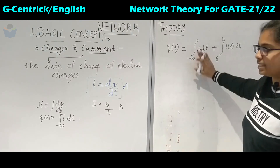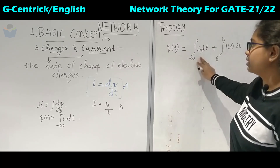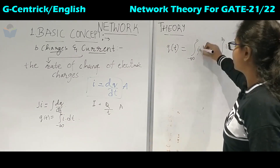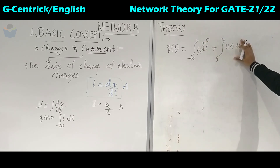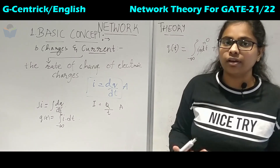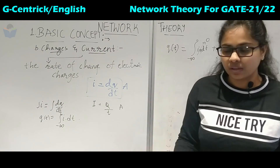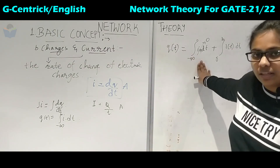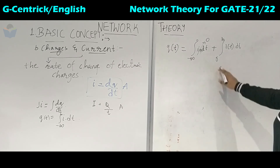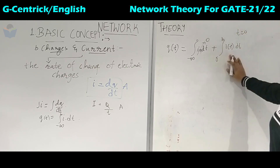The part from minus infinity to 0 indicates that if there are any initial charges present in the system, we substitute that value. If no initial charge is given, we take this term as zero and only use the second part for calculation. A good example is mobile charging — when you have low battery, say 1% or 2%, that is the initial charge before plugging into the socket. If there is no initial charge in the battery, we take it as zero, substituting at time t = 0.